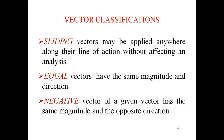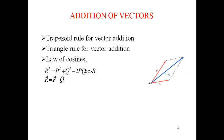Equal vectors have the same magnitude and direction. Negative vectors of a given vector have the same magnitude and the opposite direction. We can add two vectors by using a trapezoidal rule and a triangular rule.